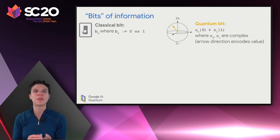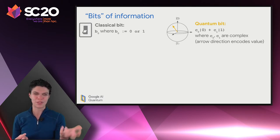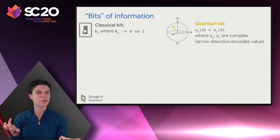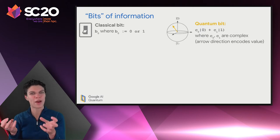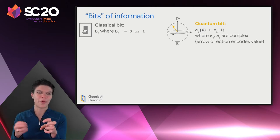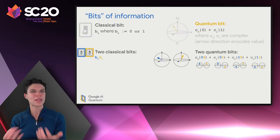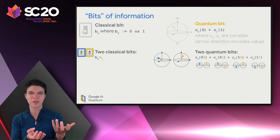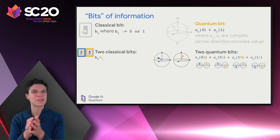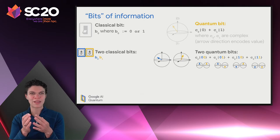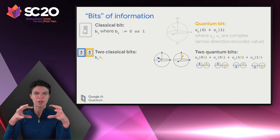Now let's think about what happens when we have more than one bit. In the classical world, a single bit is 0 or 1. In the quantum world, a qubit is represented by two constants, C0 and C1, that tell us how much of the qubit state is 0 and how much is 1. Both are complex. Suppose we have a second bit — in the classical world we have two independent bits. But in the quantum case, it's not possible to talk about the state of each qubit independently. We're now worried about the state of a two-qubit system.